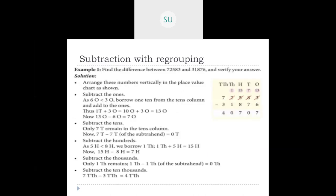In subtraction with regrouping, sometimes a digit in the minuend is smaller than the corresponding digit in the subtrahend. For example, 72,583 minus 31,876: in the ones place, 3 minus 6 is not possible, so we borrow 1 ten, making it 13 ones. 13 minus 6 is 7. The tens digit 8 becomes 7; 7 minus 7 is 0. In hundreds: 5 minus 8 is not possible, so we borrow, making it 15; 15 minus 8 is 7. Then 1 minus 1 is 0 and 7 minus 3 is 4. The answer is 40,707.